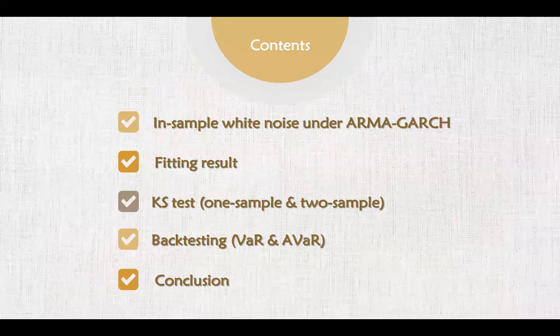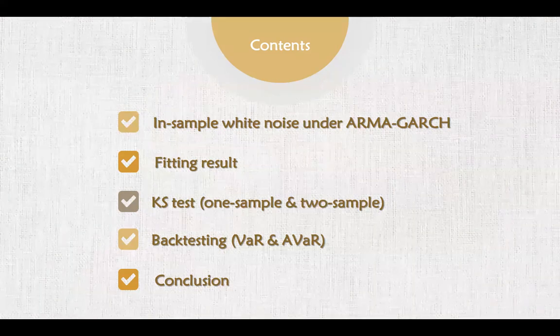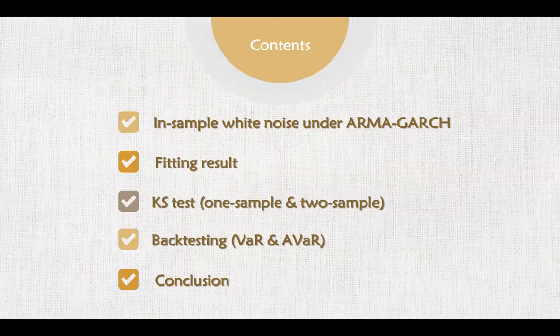First, calculating the in-sample white noise of historical data, then fitting the residue result with distributions, and calculating the degree of fitting result with the KS test. Finally, backtesting the result from the aspect of value at risk, and the conclusion will be shown at the end.